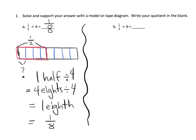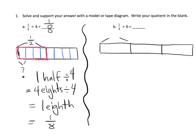Let's draw another one. This second problem is one-third divided by six. I'm going to begin by drawing one-third and make it as big a tape diagram as possible. There's my one-third. It says cut that one-third into six pieces, and we want to know the size of one of those pieces. We can see that there are 18 pieces total, so the answer is one-eighteenth.